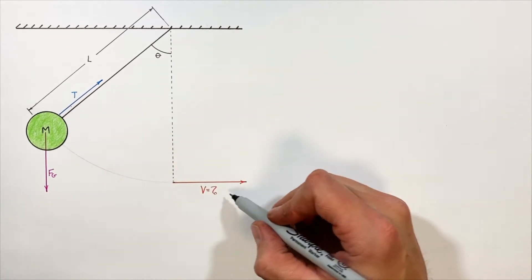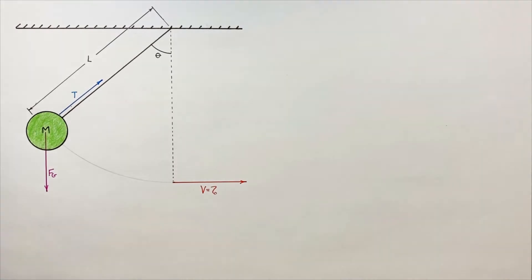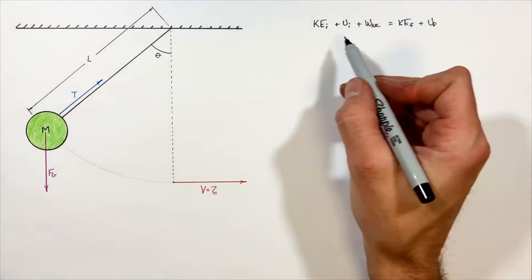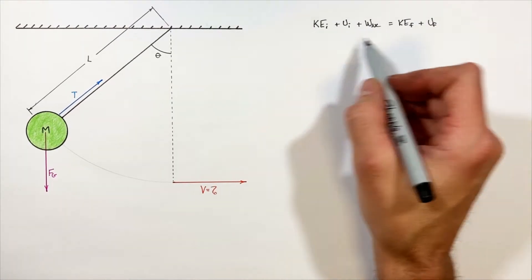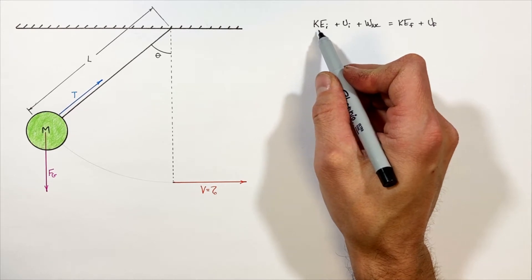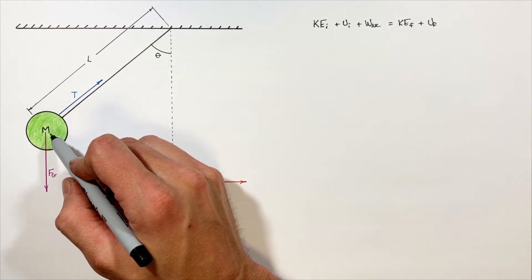Knowing the forces acting on the mass, we can now apply the work-energy theorem in order to solve for the velocity of this mass. Looking at each of these terms individually, we'll first take a look at the kinetic energy of the mass.